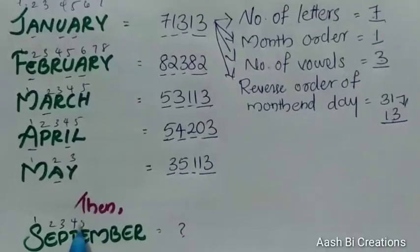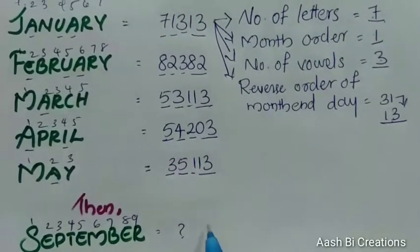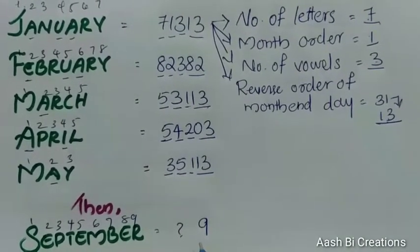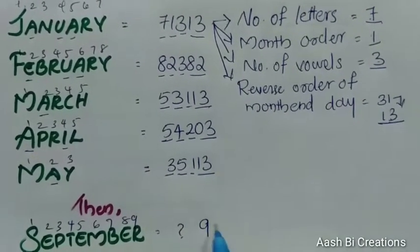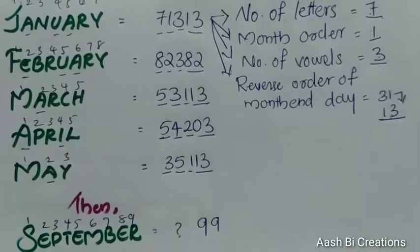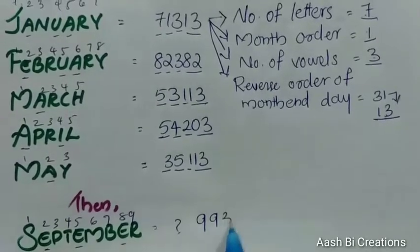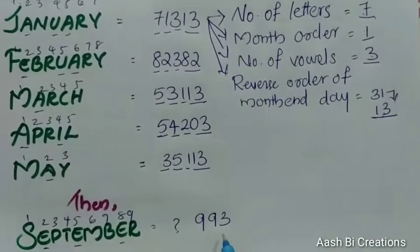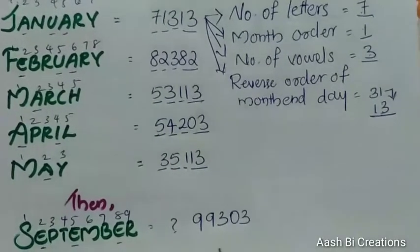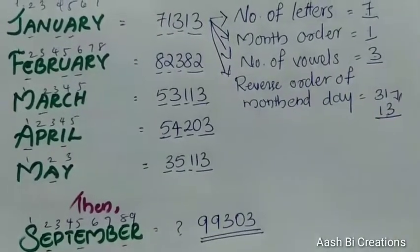So I'll give you the total letters — we have 9 letters. We use 9 letters. This is correct. The number of months is 9. The number of vowels is 3. The number is the reverse order of month and day. In September, total of 30 days. The reverse order is 03.